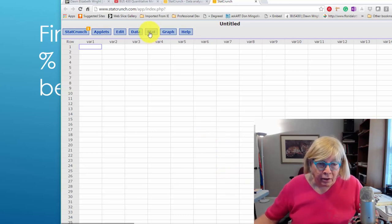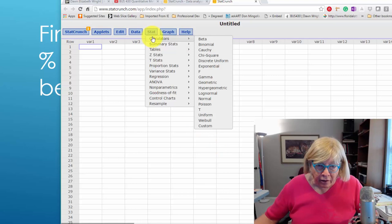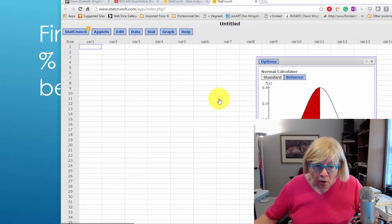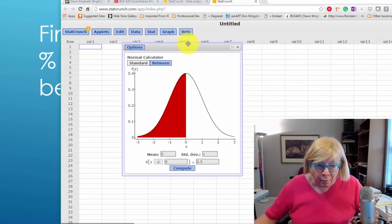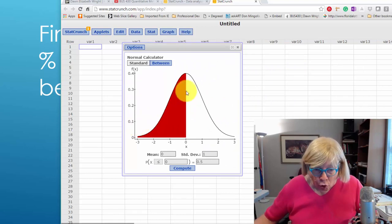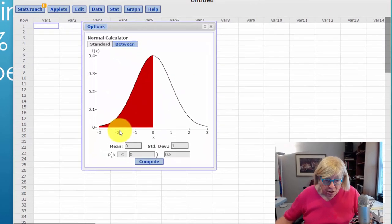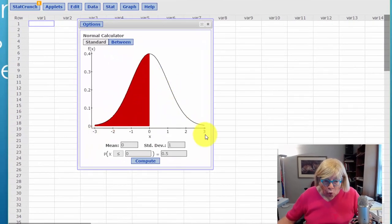In StatCrunch we go to stat, calculators, normal. The beautiful thing about StatCrunch is it draws our curve for us. This is the standard normal curve, and that's what you need in order to get z-scores. This is a between problem.